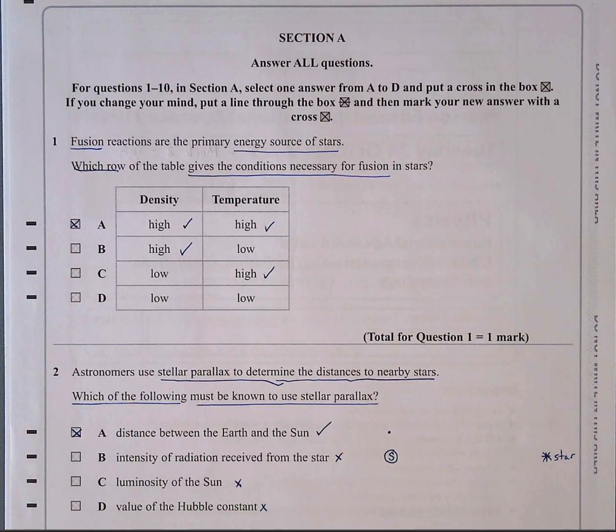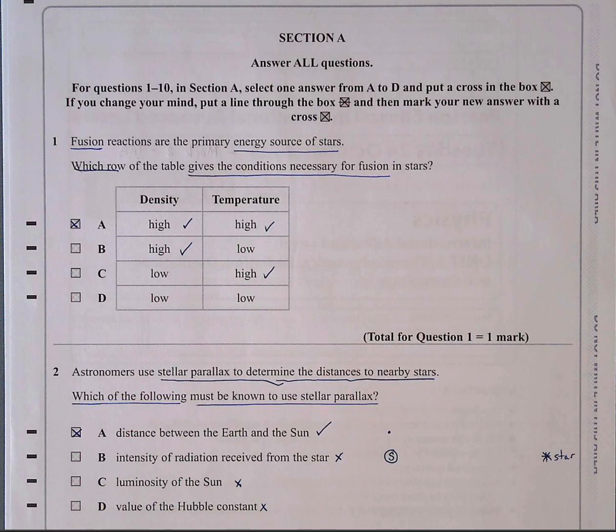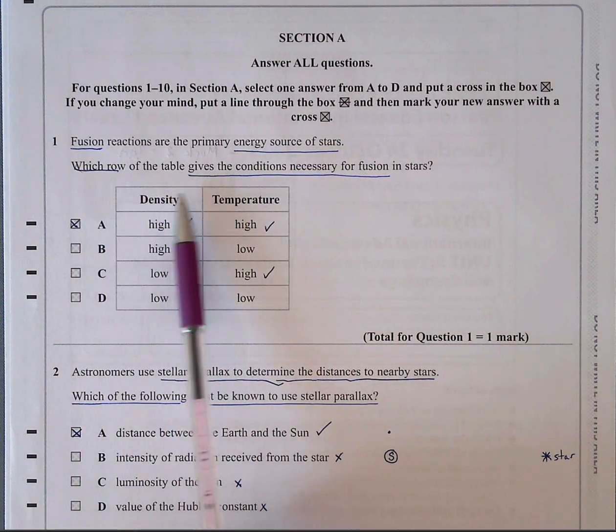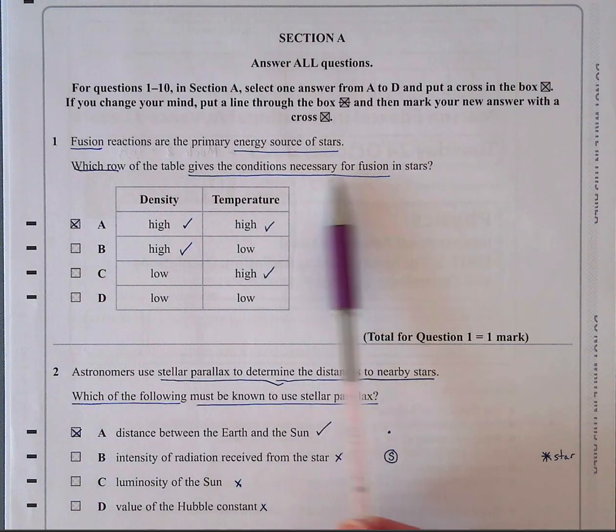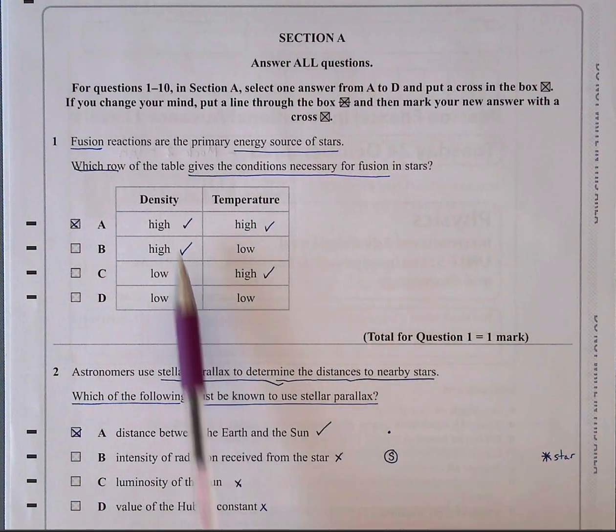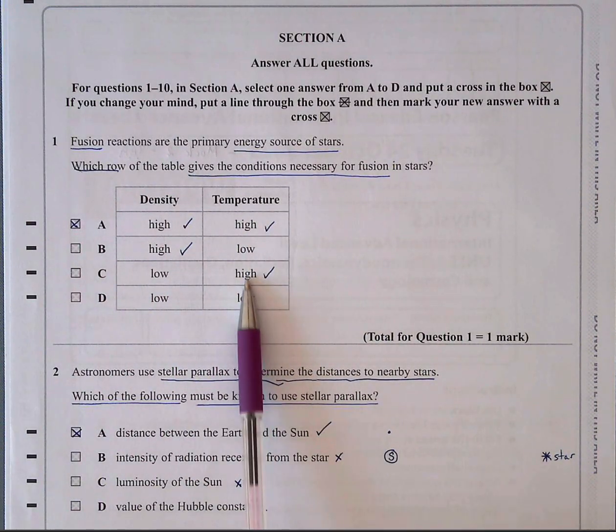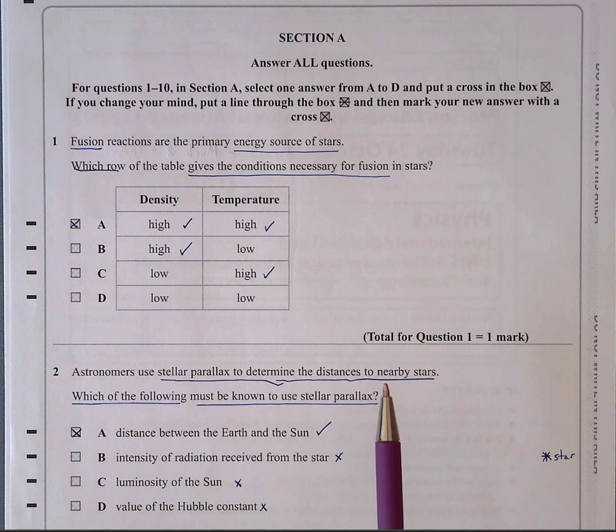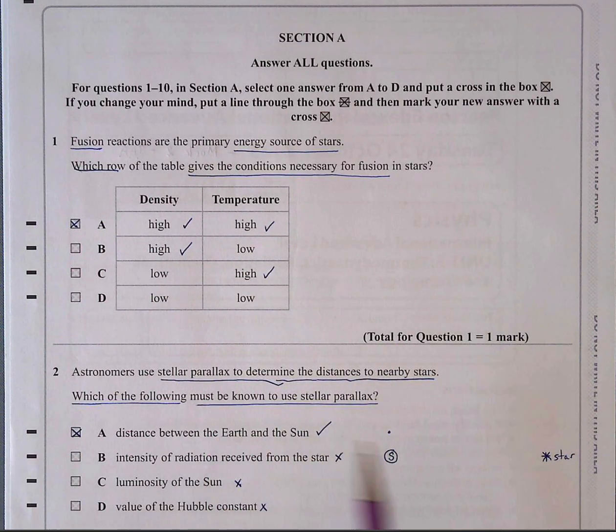The first one is about fusion reactions and fusion reactions are the primary energy source of stars. Which row gives the conditions necessary for fusion in stars? Whether you want a high density and you want a high temperature, so the only one with both is A. This is a common question in Unit 5, either in multiple choice or more routinely in a descriptive answer. You've got to explain it in terms of kinetic theory of gases.